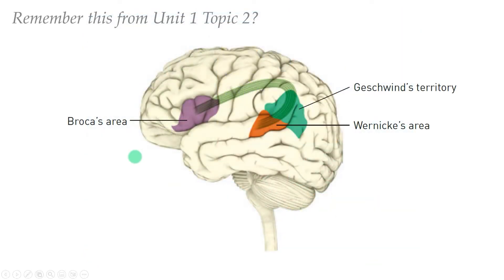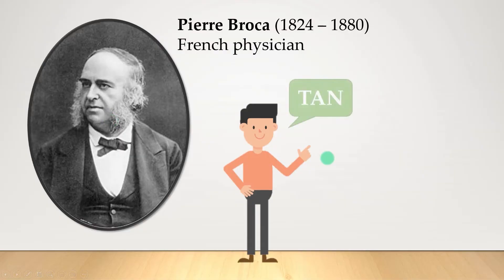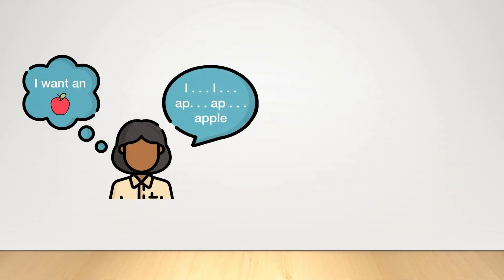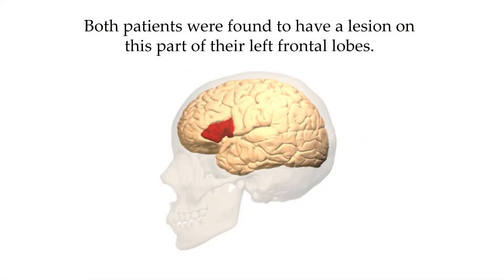Let's now look at some specific functional parts of the brain: the language centers. In Unit 1 we looked at these three sections, and we need to know them again in Unit 3. Broca's area was named after Pierre Broca, who had two patients with similar symptoms: one could only ever say the word 'tan' repetitively, while the other had only five words in his entire vocabulary. Both men would be described as having aphasia, which is a language disorder. After they died, it was found that they both had brain damage in the exact same spot — right here in the left frontal lobe — which became known as Broca's area.